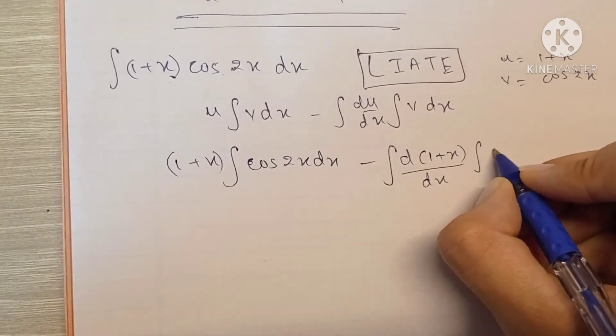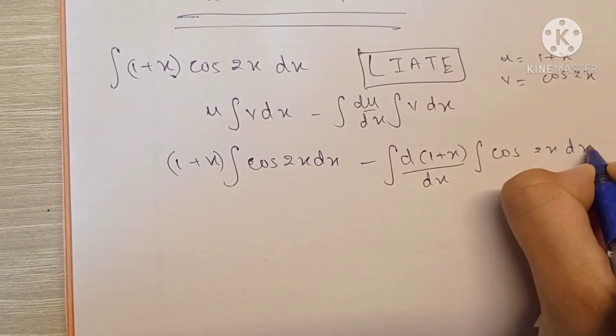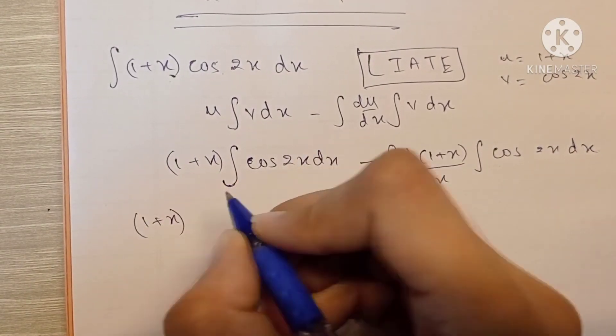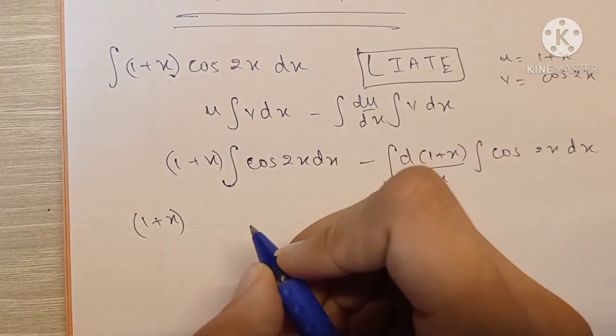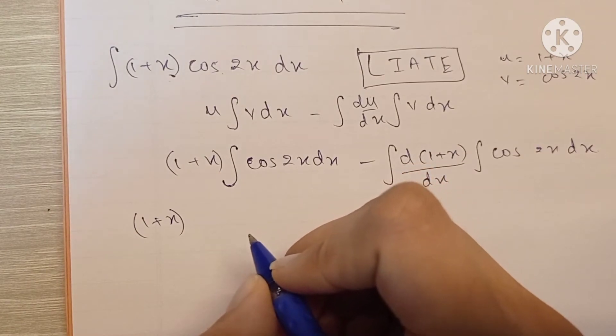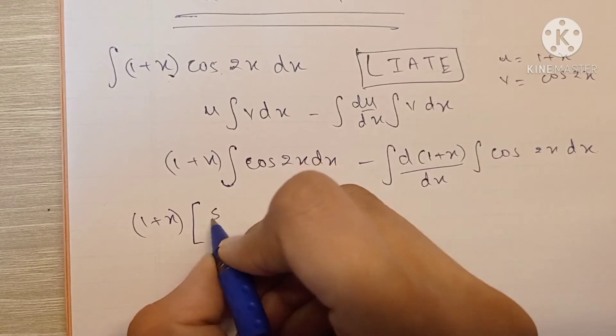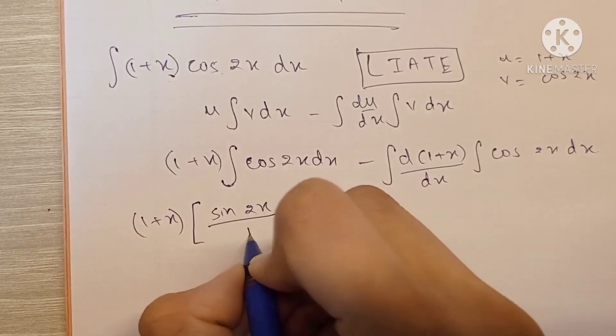(1+x) times integration of cos(2x). Now, integration of cos(x) is sin(x) upon 1, so integration of cos(2x) is sin(2x) upon 2, where 2 is the coefficient of x.